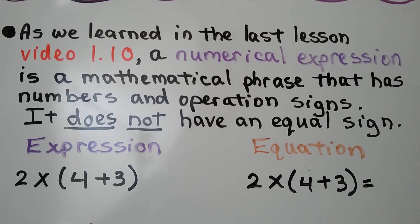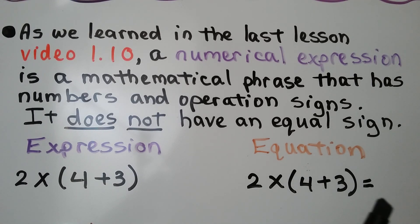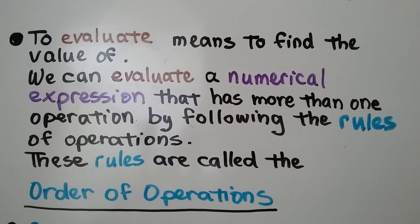As we learned in the last lesson, video 1.10, a numerical expression is a mathematical phrase that has numbers and operation signs. It does not have an equal sign. So this would be an expression, this would be an equation — it has an equal sign, this one doesn't. To evaluate means to find the value of. We can evaluate a numerical expression that has more than one operation by following the rules of operations, called the order of operations.